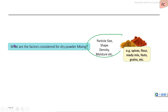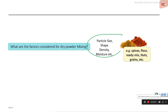The main factors to consider for dry powder or dry ingredients mixing: the dry ingredients contain particles. The particle size, shape, density, and moisture content are the main parameters which affect the mixing process.